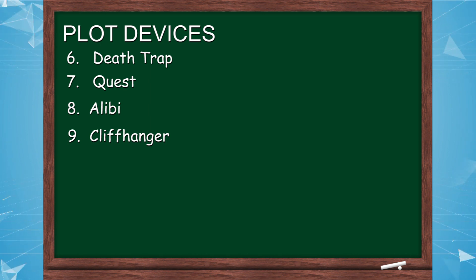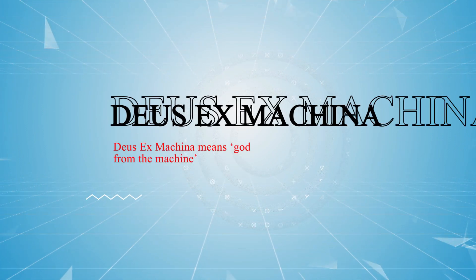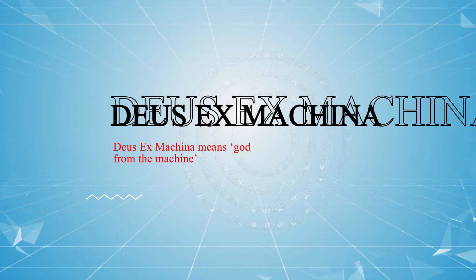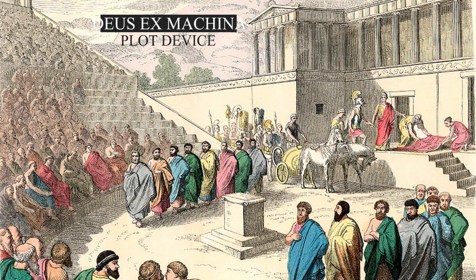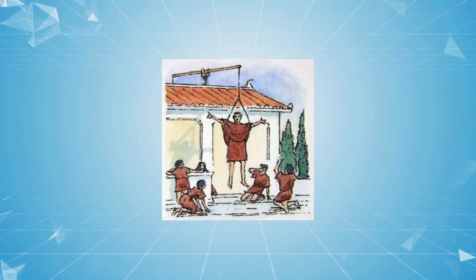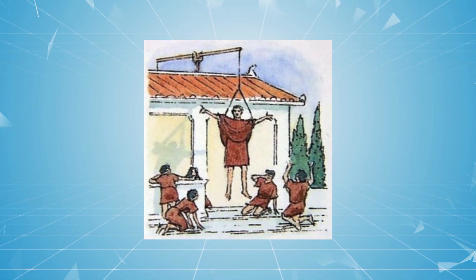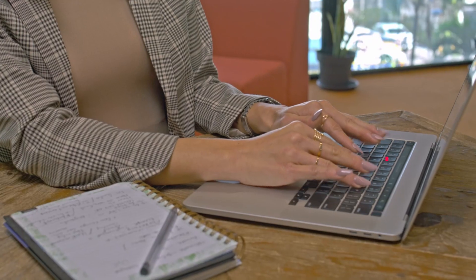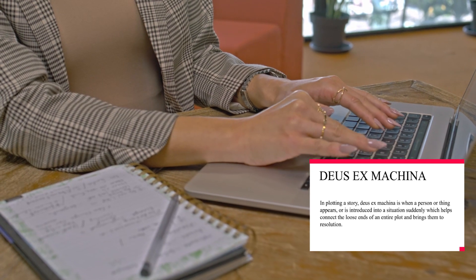For the tenth and final plot device, we have Deus ex Machina. You can pronounce the last word as machina or machina. Deus ex Machina means 'God from the machine.' The term was first used in ancient Greek and Roman drama, where it meant the timely appearance of a god to unravel and resolve the plot. The Deus ex Machina was named for the convention of the gods appearing in the sky, an effect achieved by means of a crane at that time. In plot and story, Deus ex Machina is when a person or force appears or is introduced into a situation suddenly, which helps connect the loose ends of an entire plot and brings them to resolution.